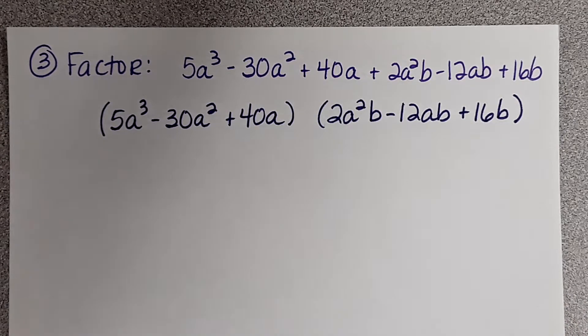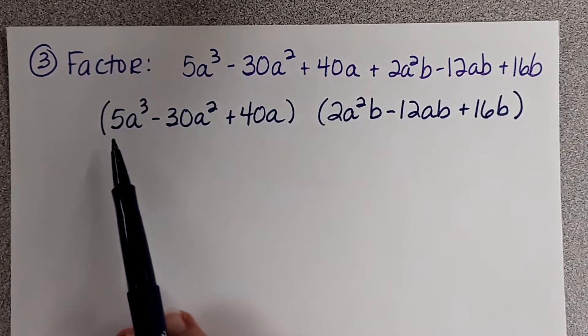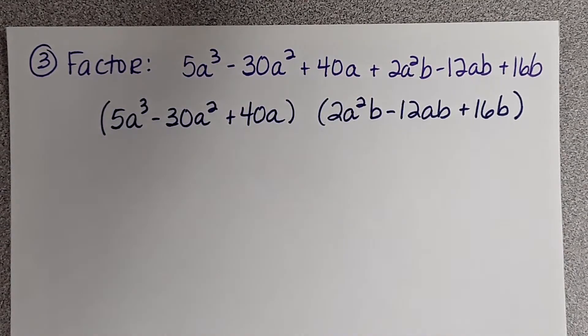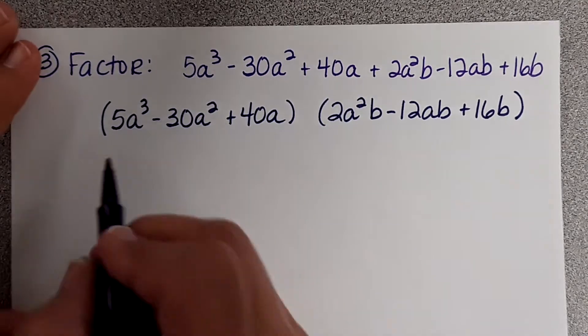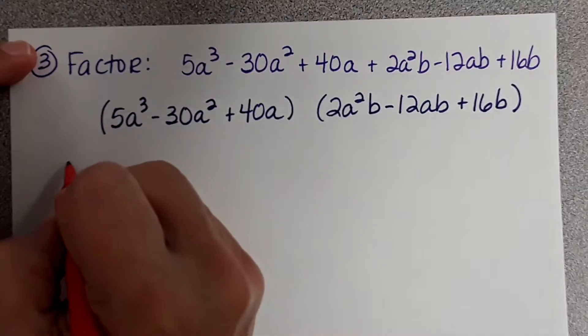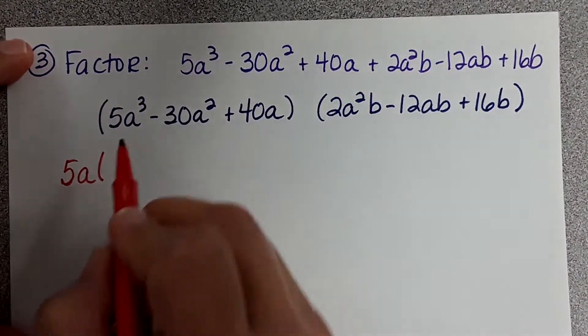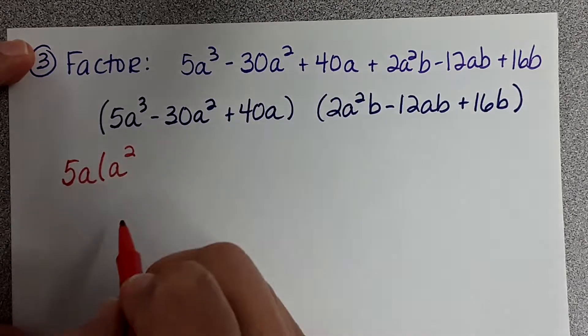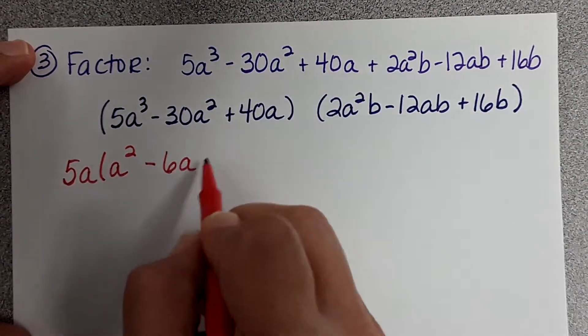Now, how did I know to do that? Well, there were six terms. If there's six terms, usually what you can do is factor by grouping. So, we're going to look at the first three terms. Does the first three terms have anything in common? They have A's and a five. How many A's do they have in common? One. So, we're going to pull out 5A. And then we're left with A squared minus 6A plus 8.